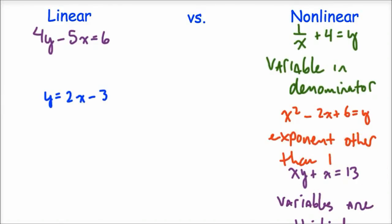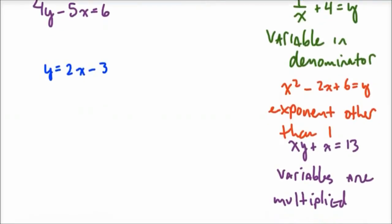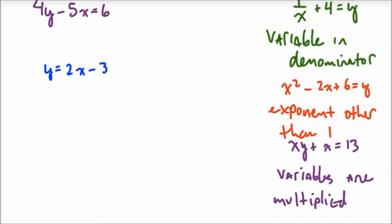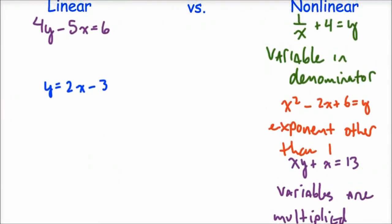And then the last one, xy plus x equals 13, you know that that's nonlinear because the variables are multiplied together. Over here, you just have constants times your variables and then addition or subtraction outside of that. So the only operations there are by constants. So that's another way to know that it's linear.